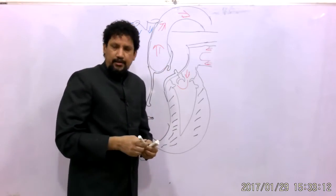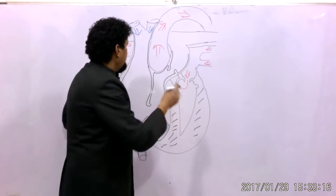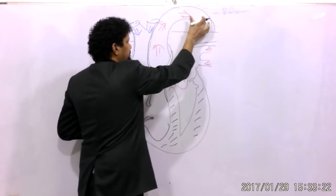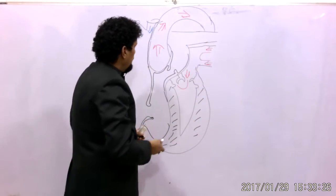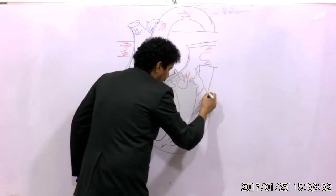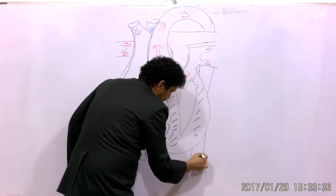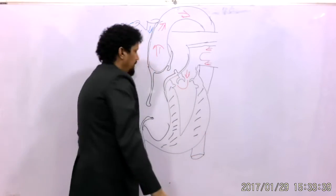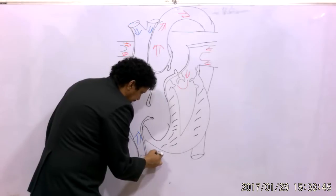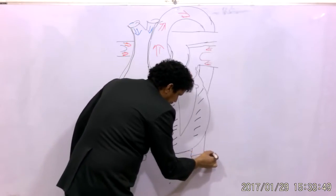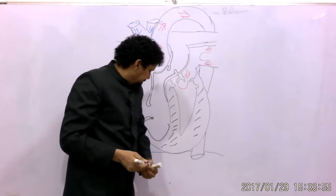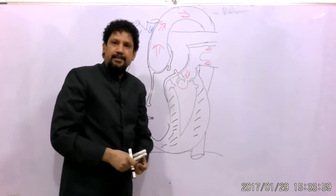The thoracic aorta has three parts: the initial part is the ascending aorta, then the arch of aorta forming an arch, and then the descending thoracic aorta, which ends in the abdominal aorta below the diaphragm. Here is the central tendon of the diaphragm, and some left muscular part. Below the diaphragm there is the fundus and cardiac part of the stomach and the liver.